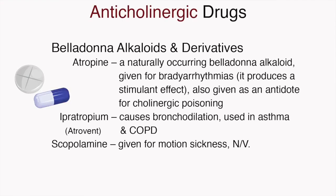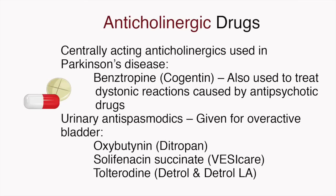Some specific examples of anticholinergic drugs include belladonna alkaloids and derivatives, such as atropine, a naturally occurring belladonna alkaloid given for bradyarrhythmias that produces a stimulant effect and is also given as an antidote for cholinergic poisoning. Another example is ipratropium, or Atrovent, which causes bronchodilation and is used in asthma and COPD. Scopolamine is given for motion sickness and nausea and vomiting. Centrally acting anticholinergic drugs used in Parkinson's disease include benztropine, or Cogentin, which is also used to treat dystonic reactions caused by antipsychotic drugs.